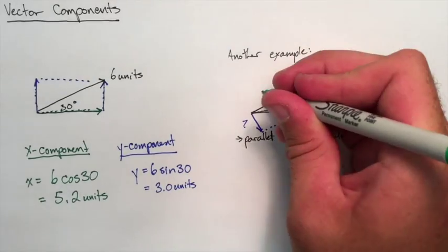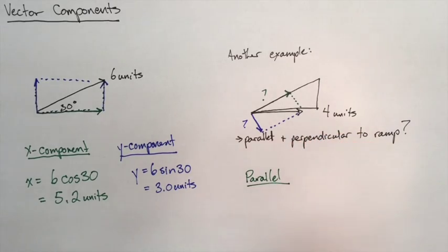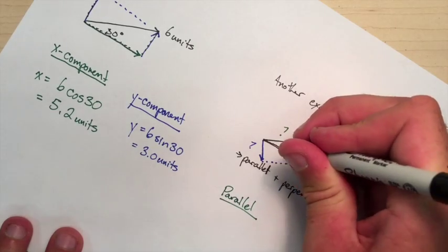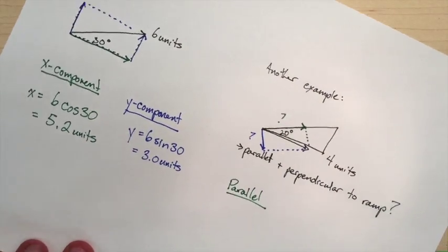All we really need to do is we need to turn the page. And now it looks like a regular thing if we use that angle of 20 degrees. We can find each of the components.